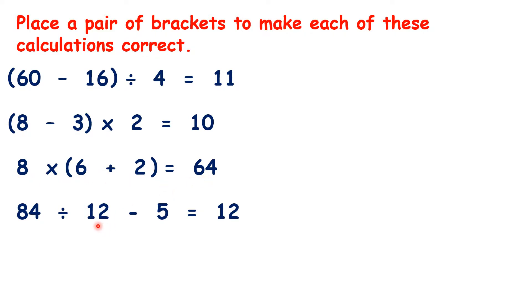And here, our brackets go around 12 minus 5, because 84 divided by 7 is 12.